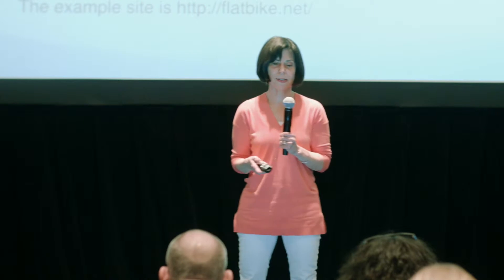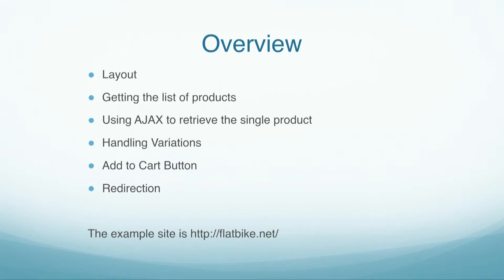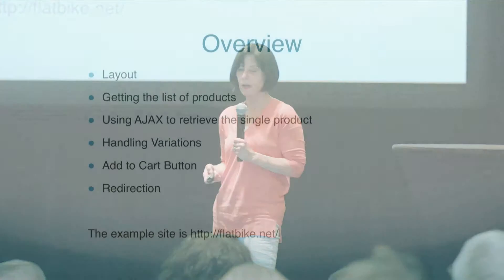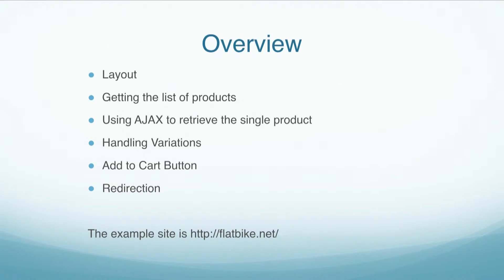What we're going to talk about today: first, getting the layout together. We're going to discuss the layout, how we get the list of the products we show, then using AJAX to retrieve the single product — that would be the information you'd typically see on the single product page. Handling variations or variable products, and finally some issues concerning the add-to-cart button.